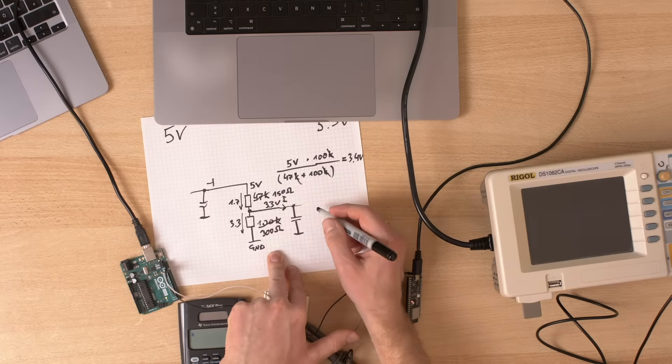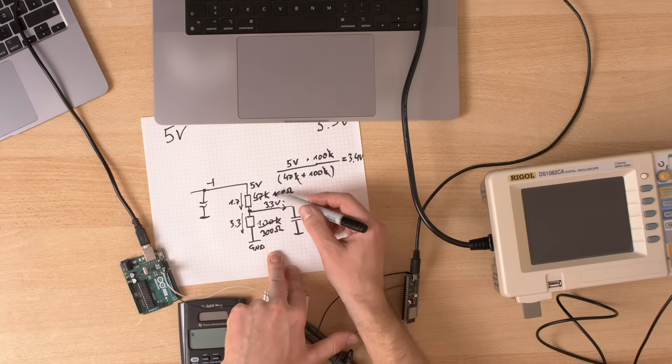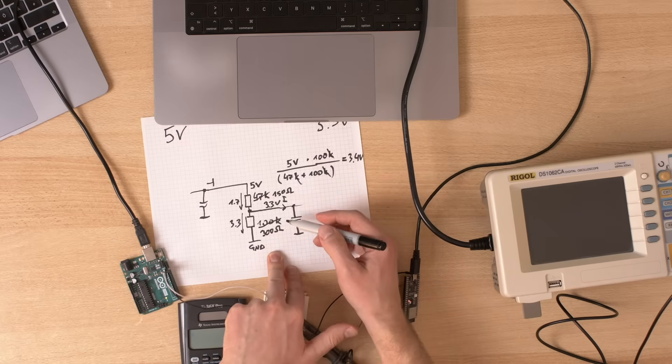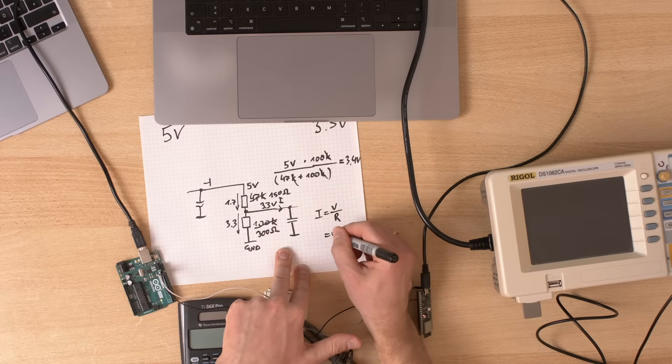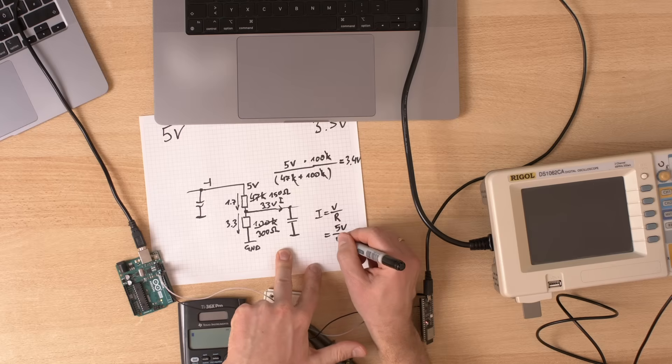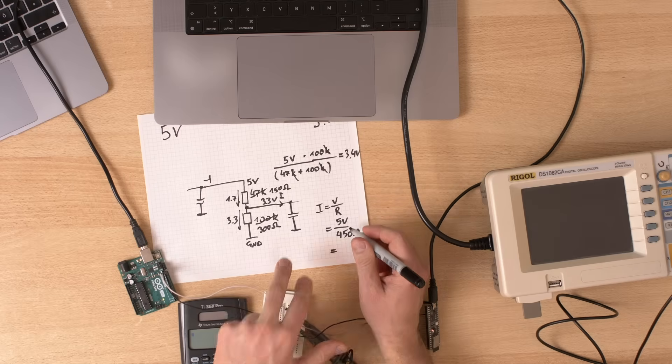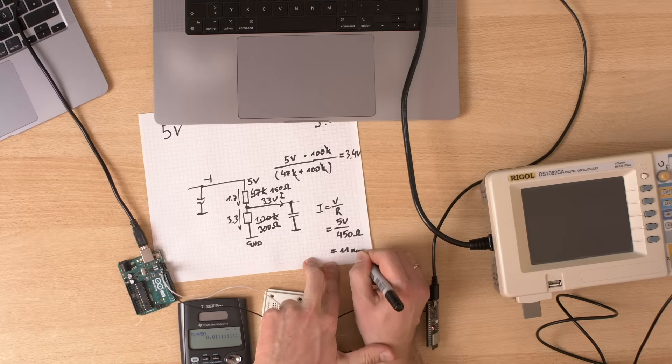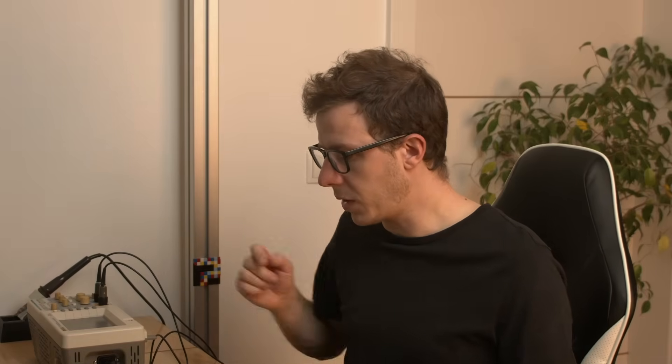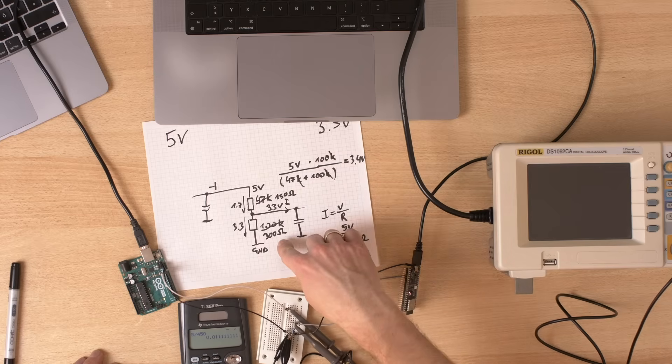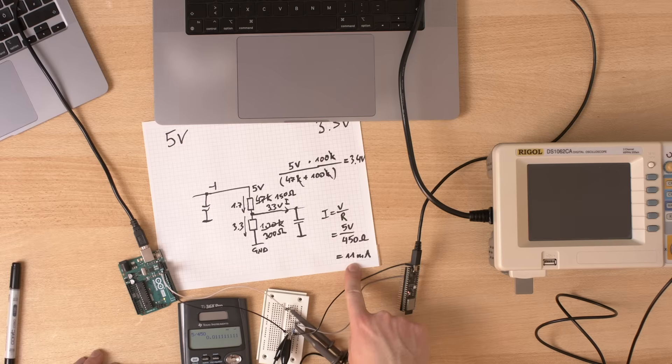But we're consuming more power. How much current is flowing here? Well, the total resistance here is 450. It's 150 plus 300. And so the current equals voltage divided by resistance equals 5 volts divided by 450 ohms. And that is 11 milliamps. That's a lot. Looking at the signal, we can probably pick values in between. Pick something like 1.5k and 3k. Then this will drop to 1.1 milliamps, which is a reasonable amount. And the signal will look pretty good.